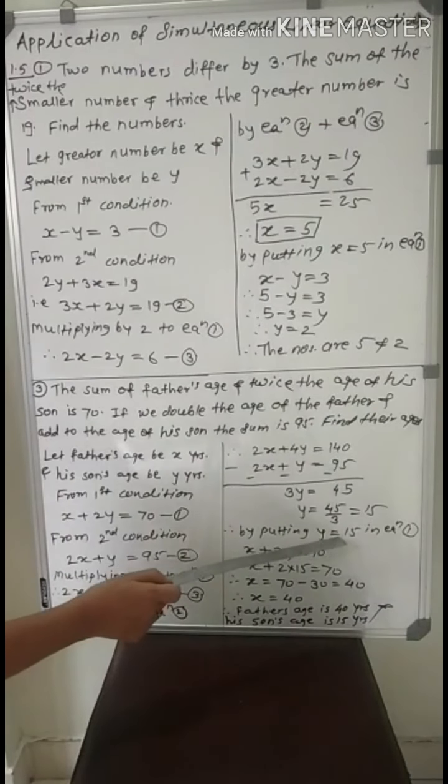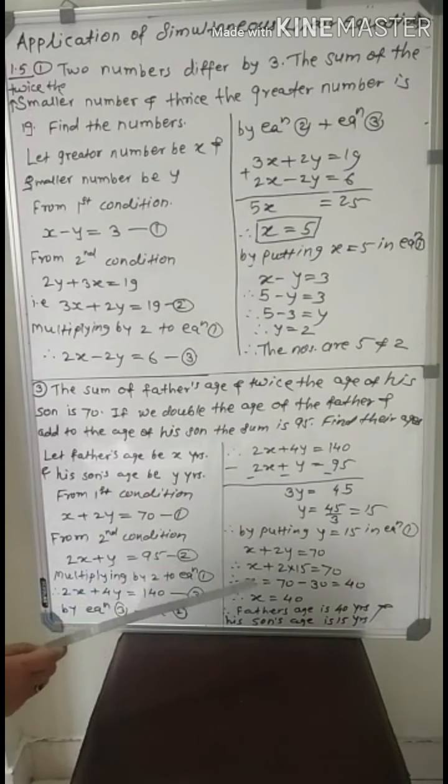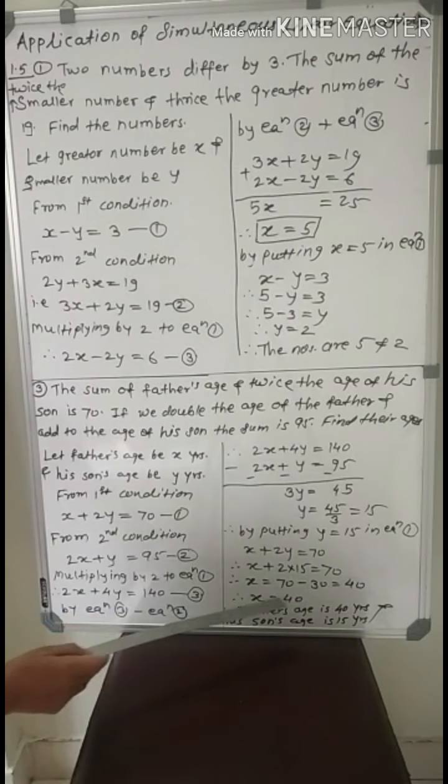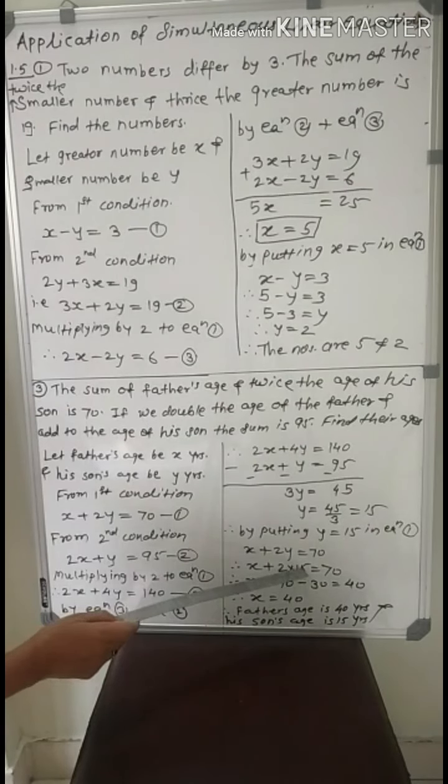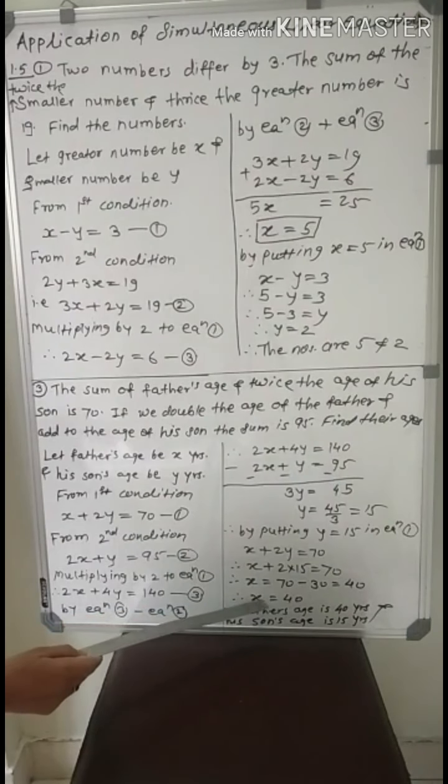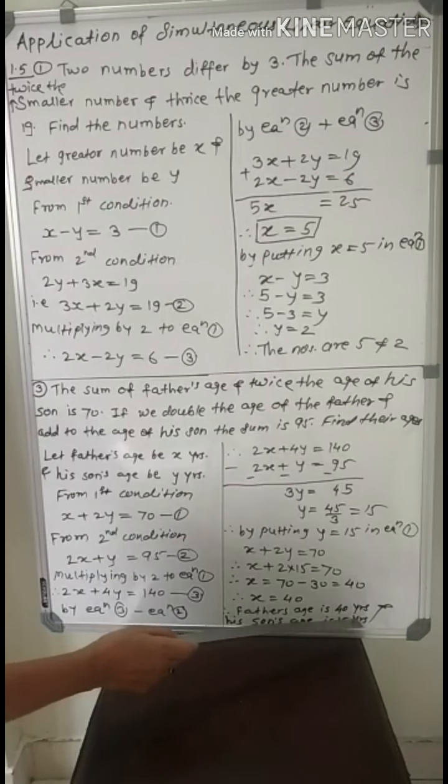By putting y equal to 15 in equation 1, equation 1 is x plus 2y equal to 70. X plus 2 into 15 equals 70. X plus 30 equals 70. 70 minus 30 equals 40. So value of x is 40. x is the father's age.